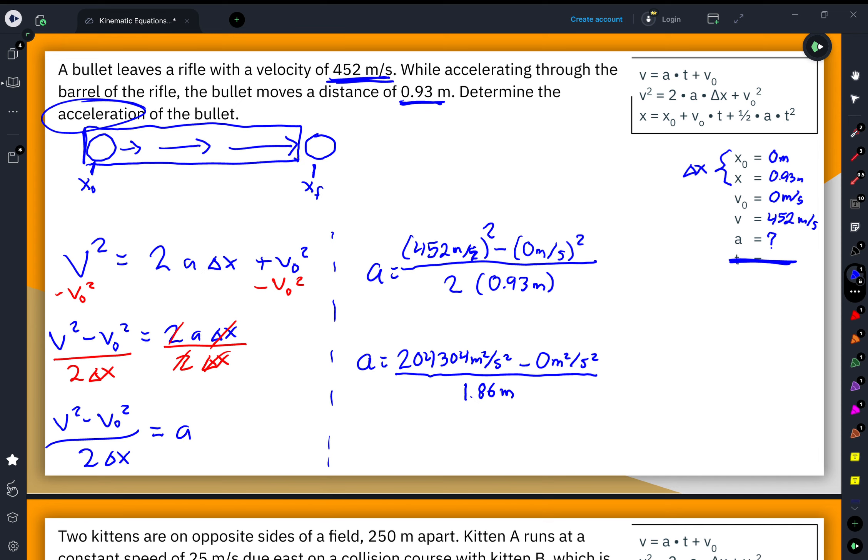Then when I take the numerator, 204,304 minus 0, which is 204,304 meters per square seconds, and divide it by the denominator, I will end up with an acceleration value of 109,840.8602.